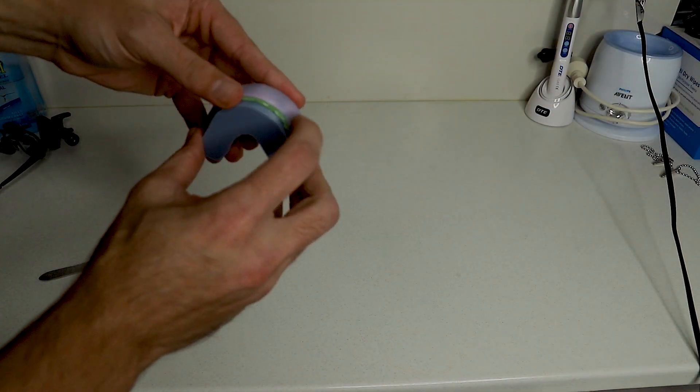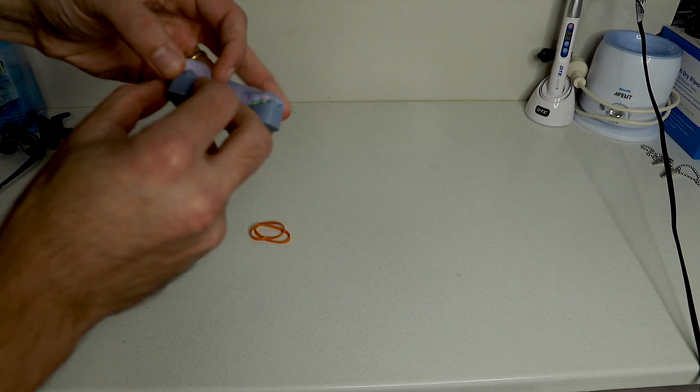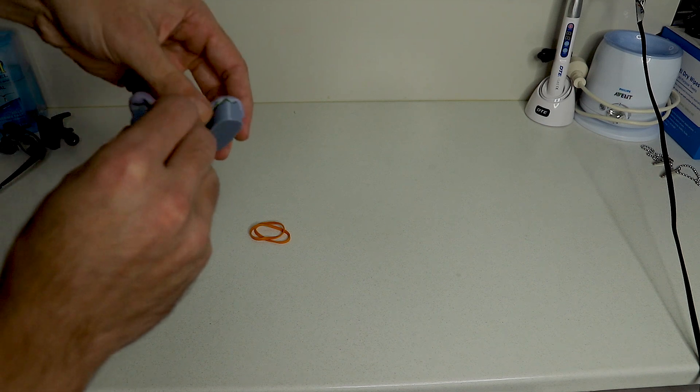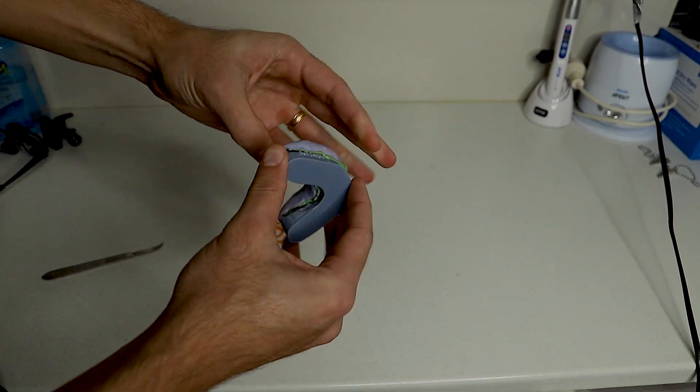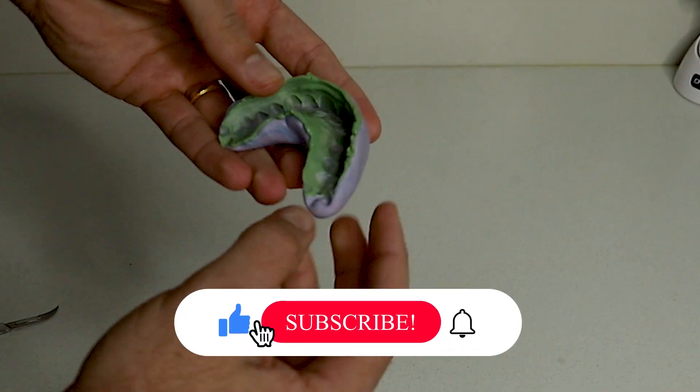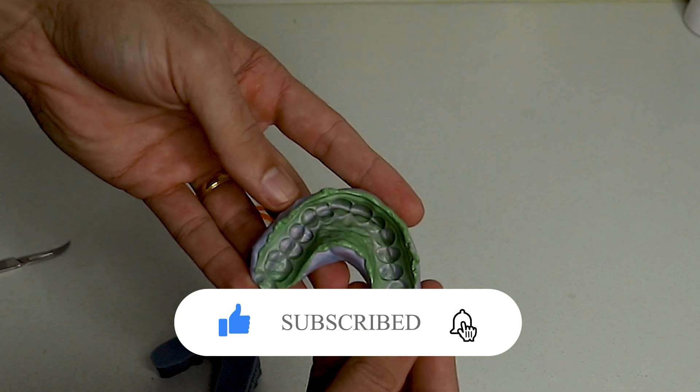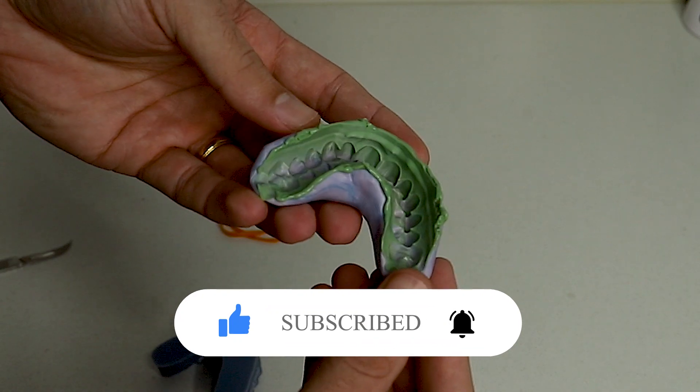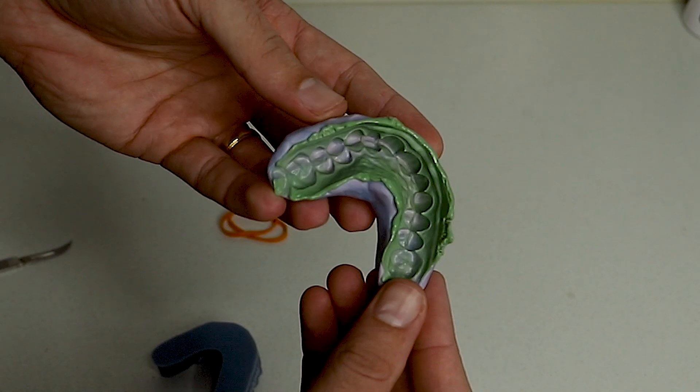Okay now that this is set it's really firm, we're going to take this out and just pry it off but do it kind of gently to make sure that the light body doesn't actually separate from the putty. Perfect. And you can see where the green is, that's the extra detail that we've now captured. That looks really good.